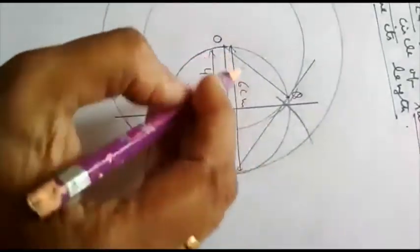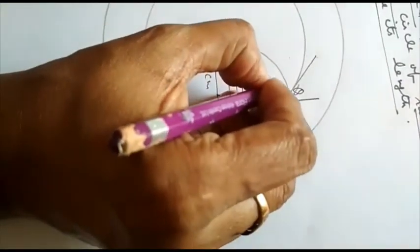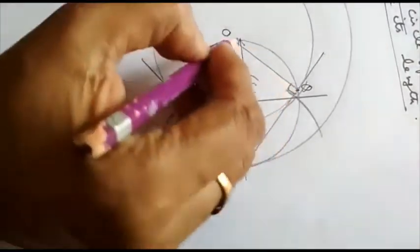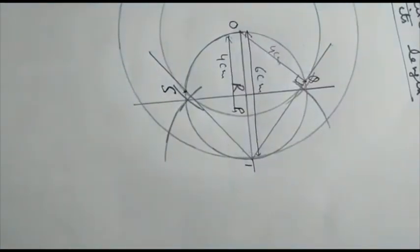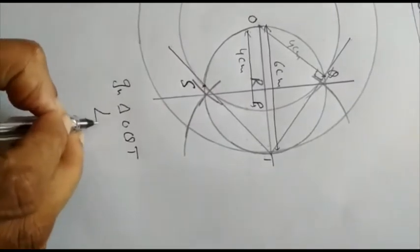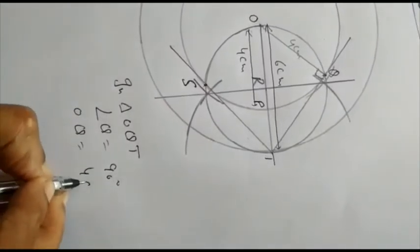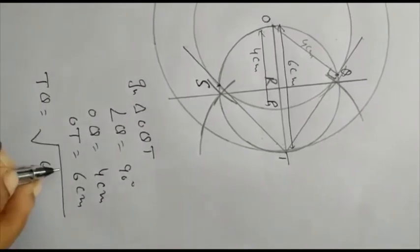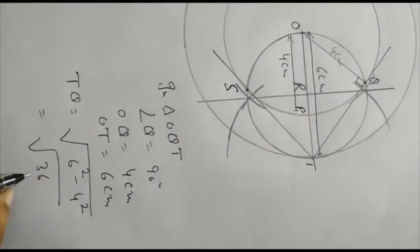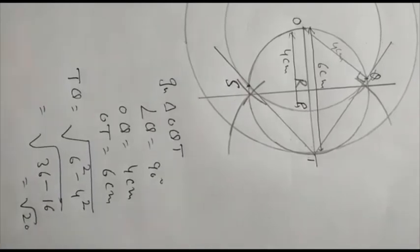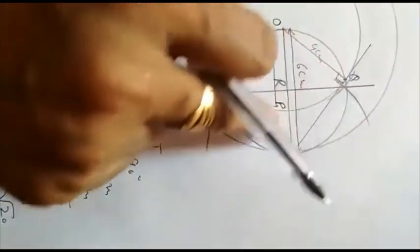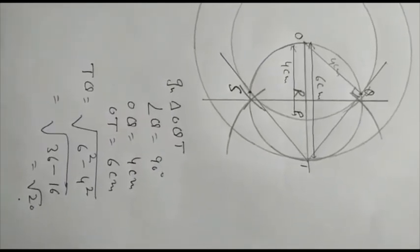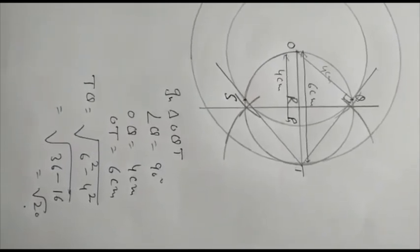Since the radius is perpendicular to the tangent, this angle is 90 degrees. The tangent length is 6 centimeters and the radius is 4 centimeters. By Pythagoras, in triangle OQT with angle Q = 90 degrees, OQ = 4 centimeters and OT = 6 centimeters: TQ = √(6² − 4²) = √(36 − 16) = √20. If measured by actual construction and by calculation, they will be approximately equal. In this way, we can verify the result, and I hope you are able to draw a tangent to a given circle from an external point. Thank you.